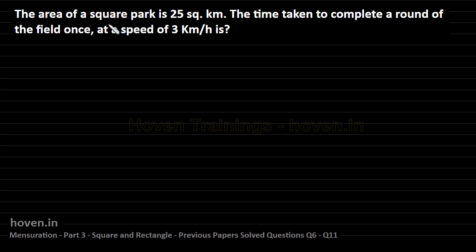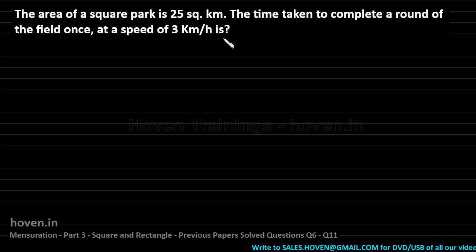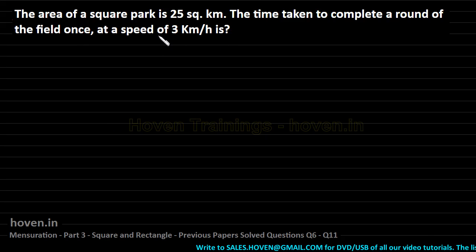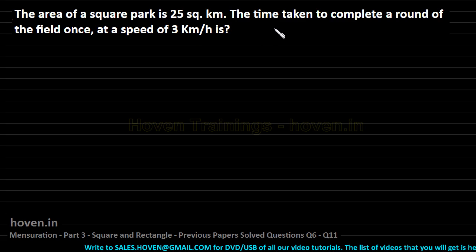The area of a square park is 25 square kilometers. The time taken to complete a round of the field once at a speed of 3 kilometers per hour is what? Now, this speed is the hint for us that since we require time, we must have the speed.